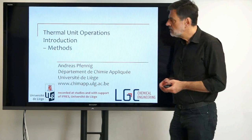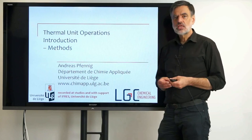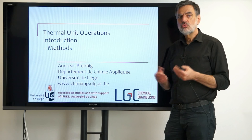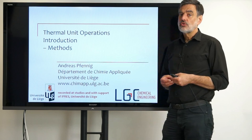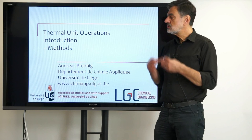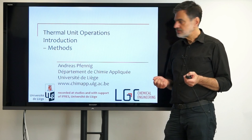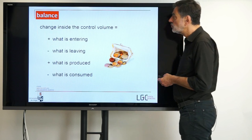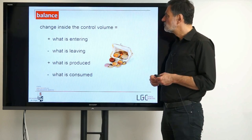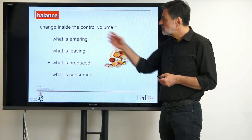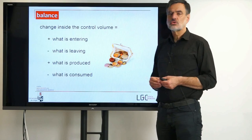What is a balance? I assume that if you are studying chemical engineering, you have been told how to apply balances, how they work in principle and in detail, already in other lectures. Nevertheless, I would like to mention here in principle some fundamental statements about a balance. In a very general way, a balance can be written like this: the change within a control volume equals what is entering minus what is leaving plus what is produced minus what is consumed.